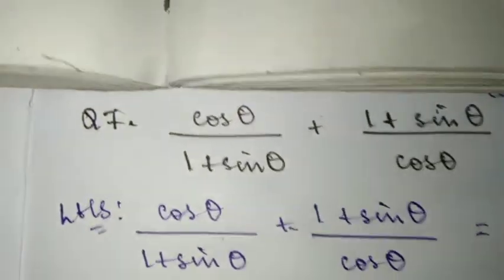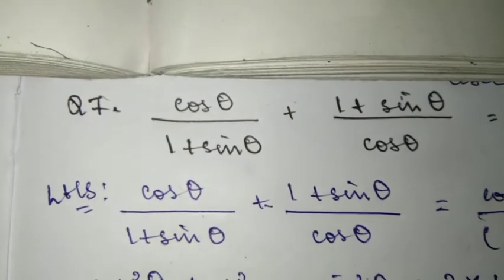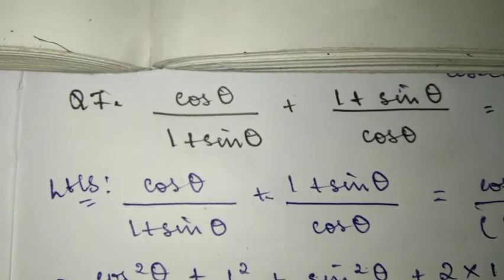So now, first of all, you will write down what is on the left hand side. I'll write LHS here. Since we have fractions to combine, we'll find the LCM.